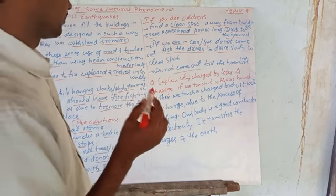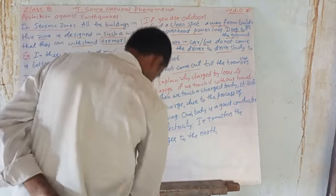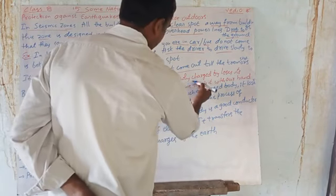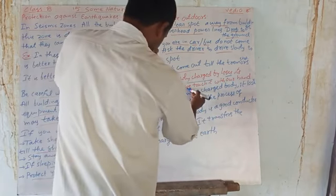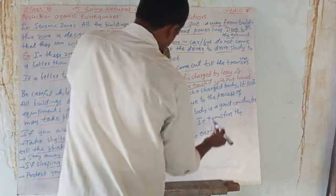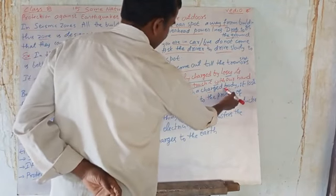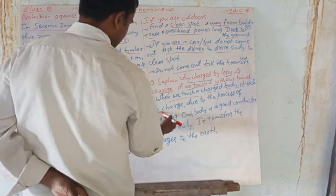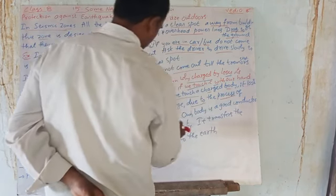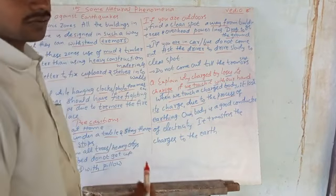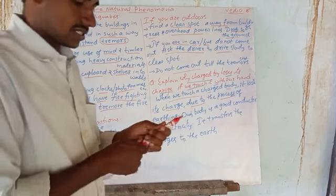Now, explain why a charged body loses its charge if we touch it. When we touch a charged body, it loses its charge due to the process of earthing.